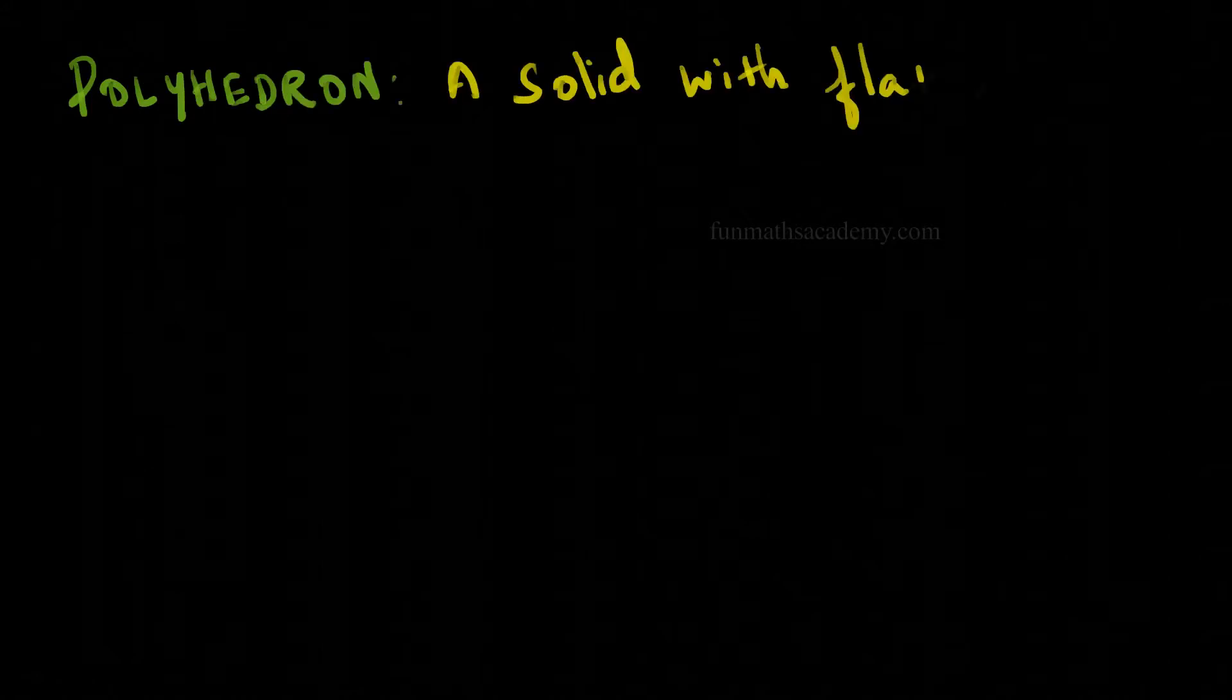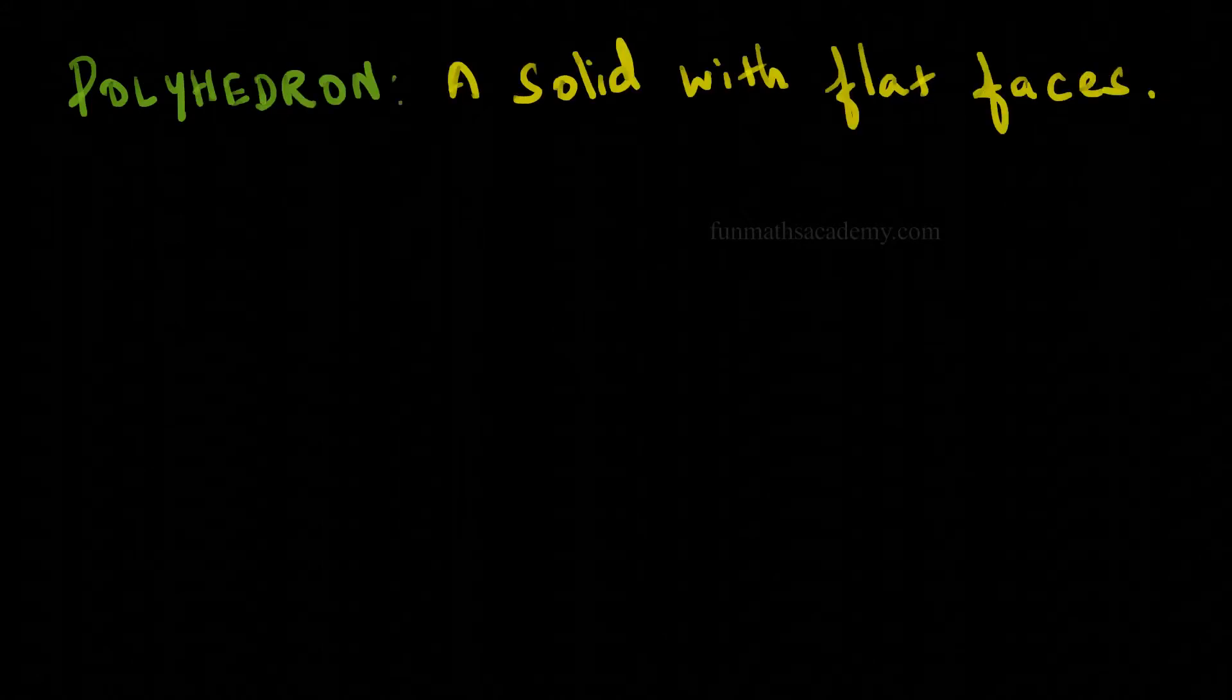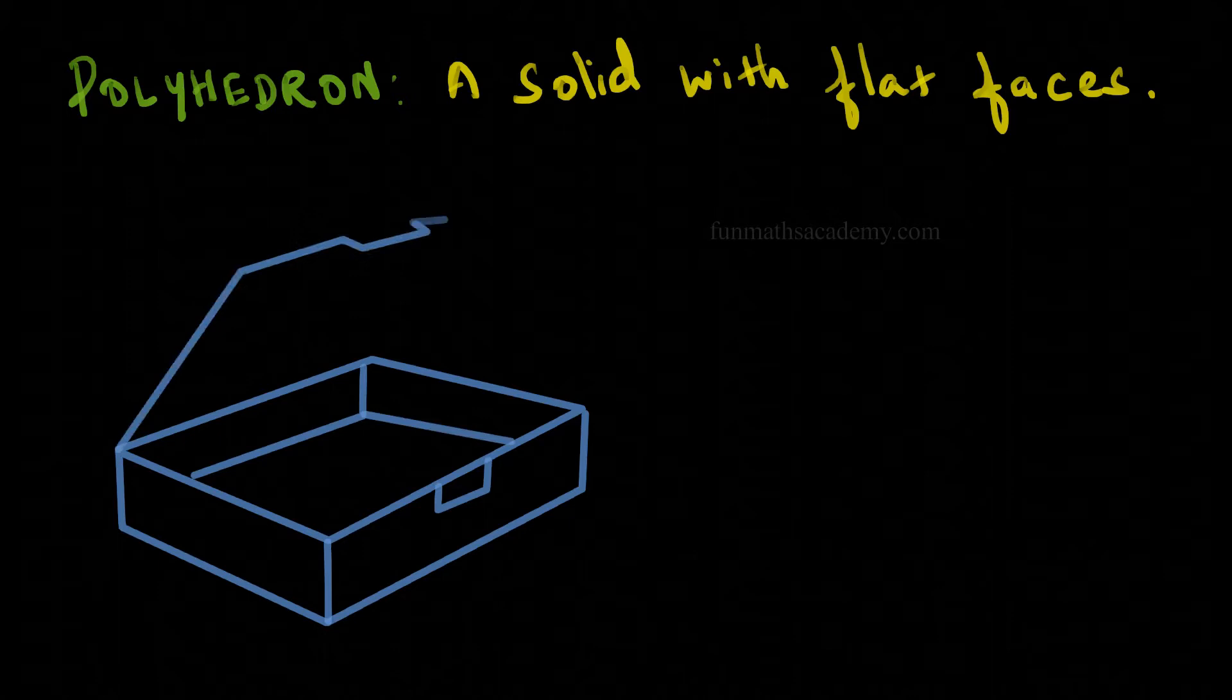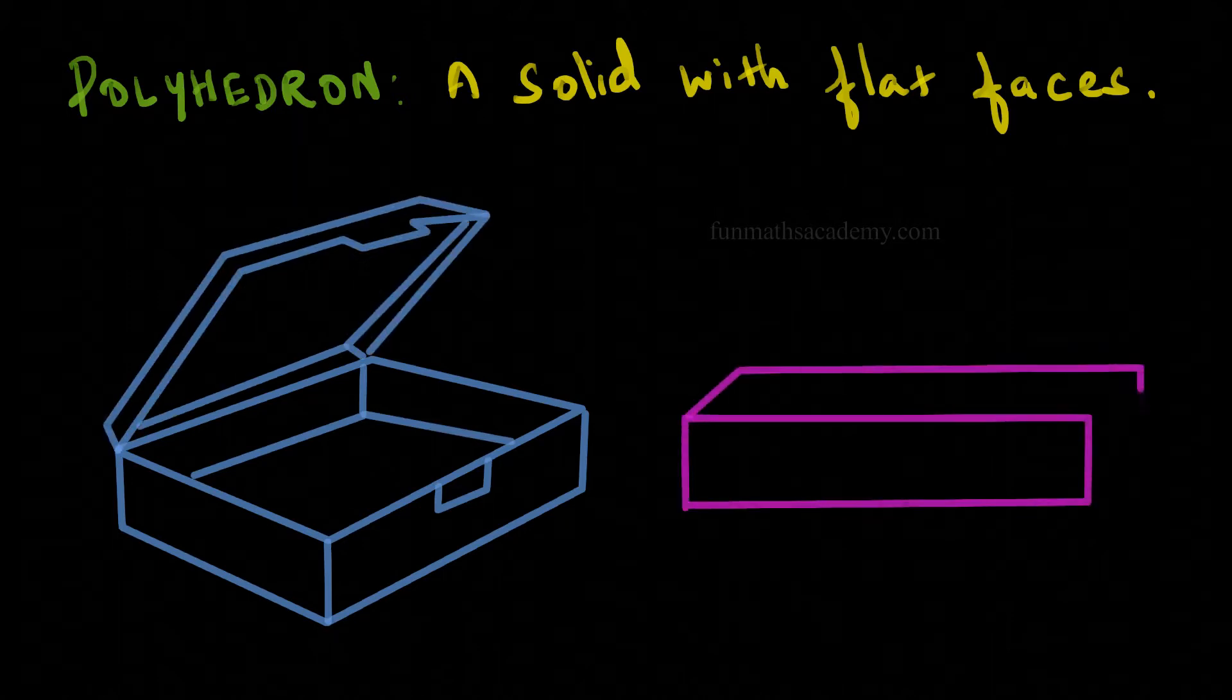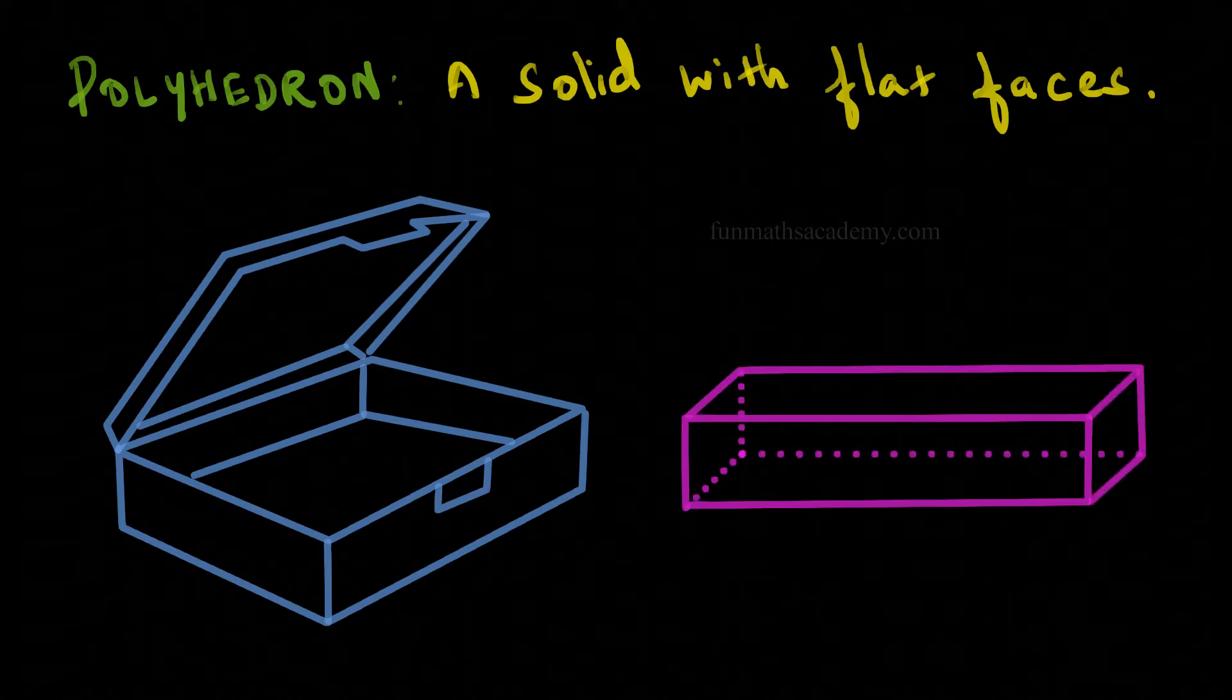A solid with flat faces is called a polyhedron. Now, to customize and create a lunchbox like this one in a 3D printer, you need a thorough knowledge on the shape of this lunchbox, which is a polyhedron.